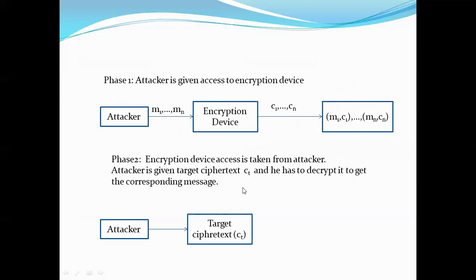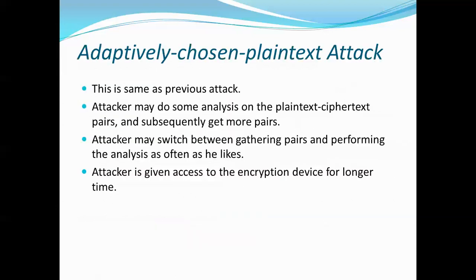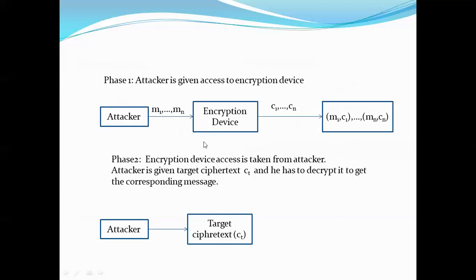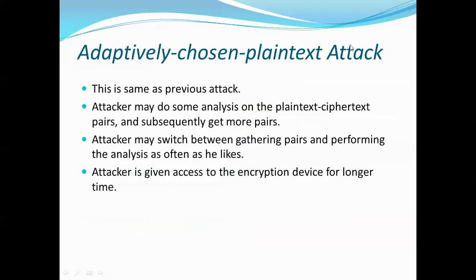The adaptively chosen plaintext attack is similar to the previous attack, but with one additional advantage: the attacker can access the encryption device multiple times. He can get some pairs, do analysis, then access the device again to generate more pairs, and switch between collecting pairs and analyzing them. He has access to the encryption device for a longer period of time, and then a target ciphertext is given to him for which he must find the corresponding plaintext.